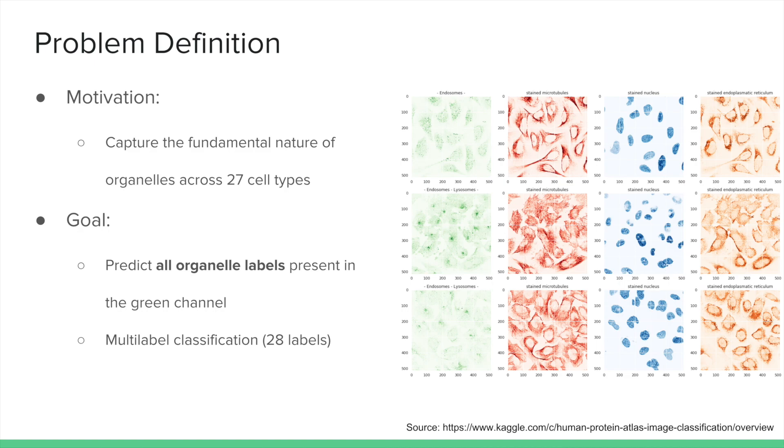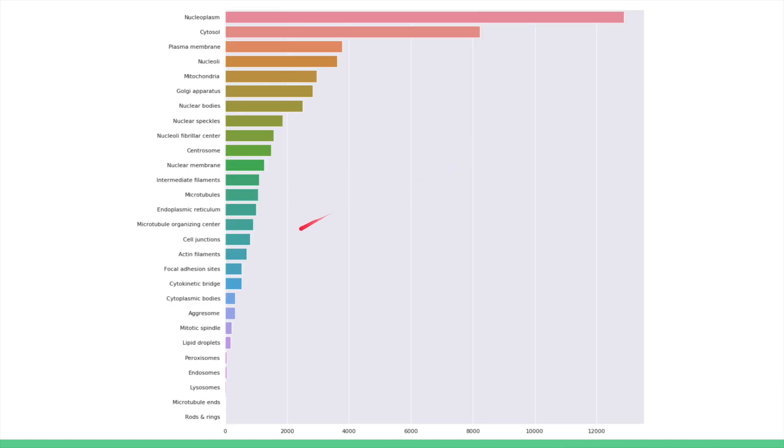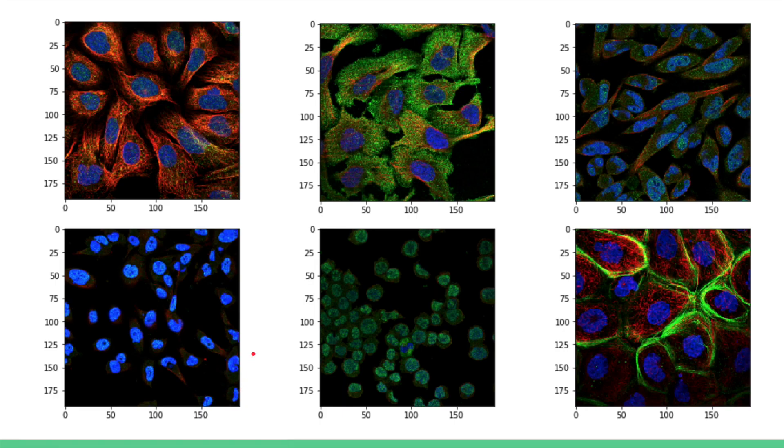Second, there is strong label imbalance inherent in the dataset, with some labels appearing less than 0.4% of the time. Lastly, there are 27 different cell types, which vary greatly.